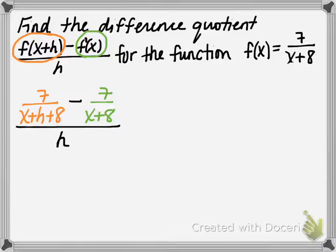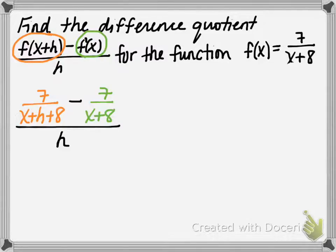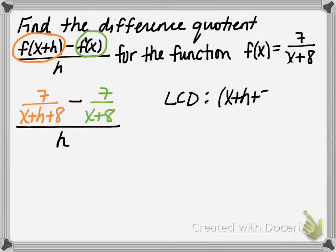We need to deal with the numerator first — the orange minus the green. So we need to find a common denominator. The least common denominator between the orange fraction and the green fraction is the denominator of the orange, which is x plus h plus 8, times the denominator of the green, which is x plus 8.